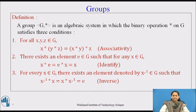Let us start with the definition of a group. A group G, star is an algebraic system in which the binary operation star on G satisfies three conditions. Number 1: for all x, y, z which belong to G, x star (y star z) is equal to (x star y) star z, which is known as the property of associativity, i.e., the operation star is associative on G.